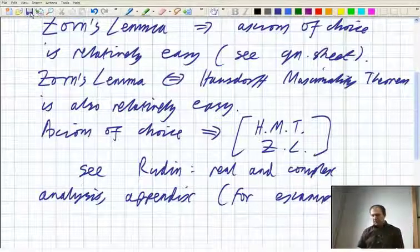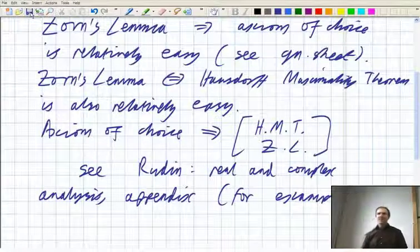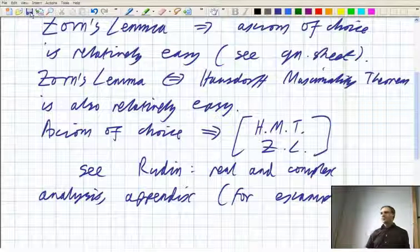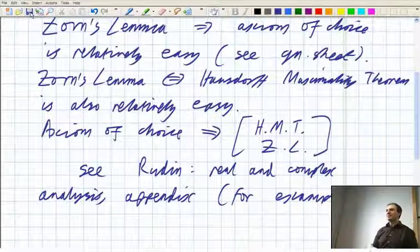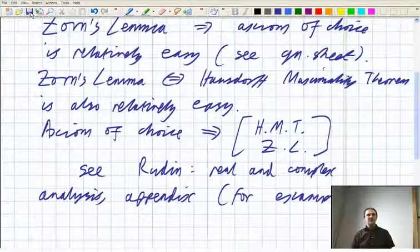But we will be assuming the axiom of choice and in view of that, we will be assuming Zorn's lemma and Zorn's lemma is the one we're going to use in this module at various points.